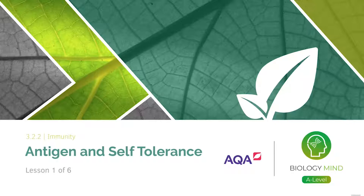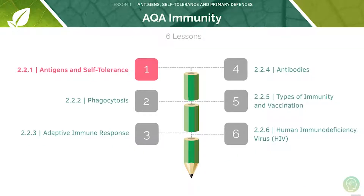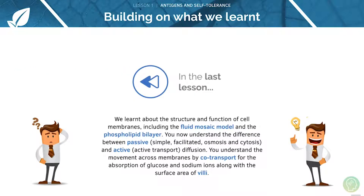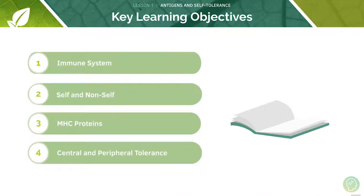Welcome to lesson one of six in this tutorial covering antigens and self-tolerance. This is the first video in our series of six lessons on the topic of immunity. In the last lesson we looked at cell structure and functions of cell membranes. Here are the key learning objectives for today's lesson: first we'll be looking at the immune system, then at the principles of self and non-self. We'll also be looking at MHC proteins and central and peripheral tolerance.